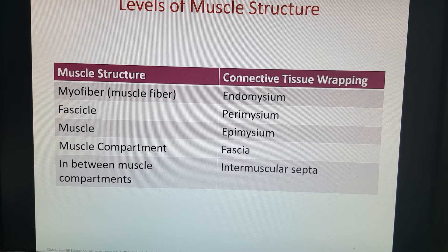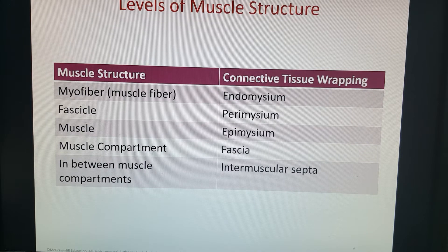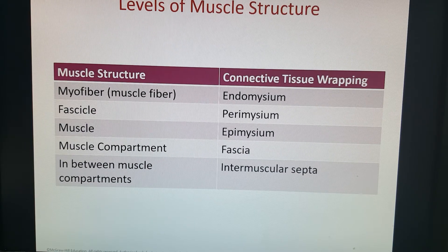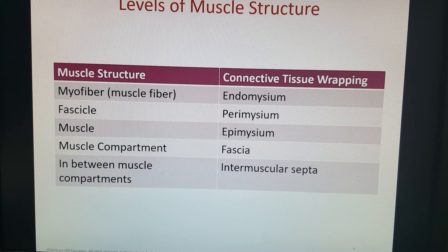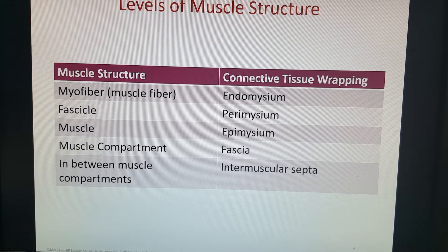Some of our muscles work together and form a muscle compartment. The connective tissue wrapping around it is called fascia. And then between our muscle compartments — in certain areas of the body you have multiple muscle compartments in the same area that don't have the same jobs — separating between them we have intermuscular septa, which is a thicker form of fascia.